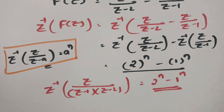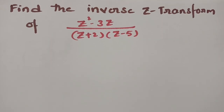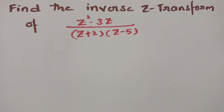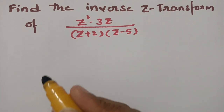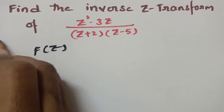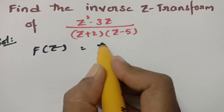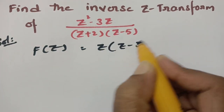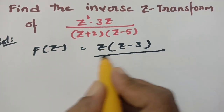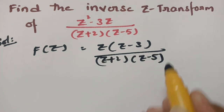There is another problem ready for you. We have to find the inverse Z transform. Taking this as capital F of Z and taking Z common, we get Z times Z minus 3 by Z plus 2 into Z minus 5.